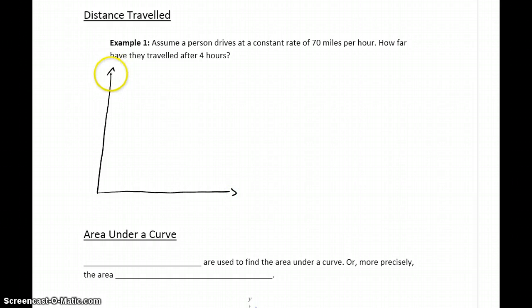So we could represent this on a graph, with our x-axis representing time, t, in hours, and the y-axis representing r, the rate traveled, or the rate of speed.